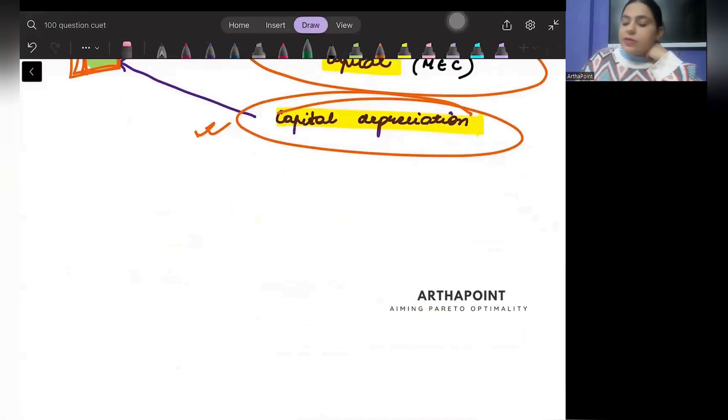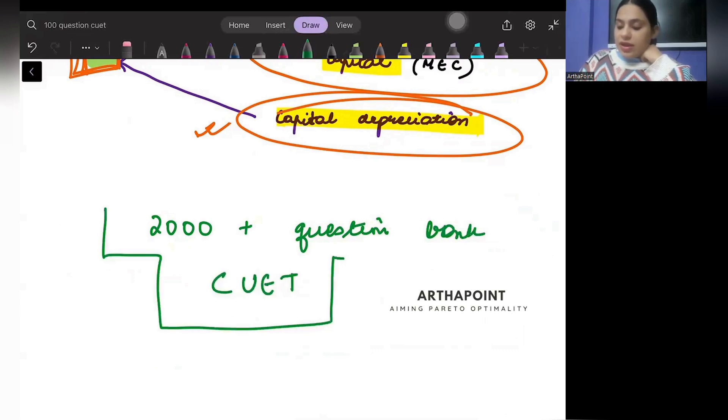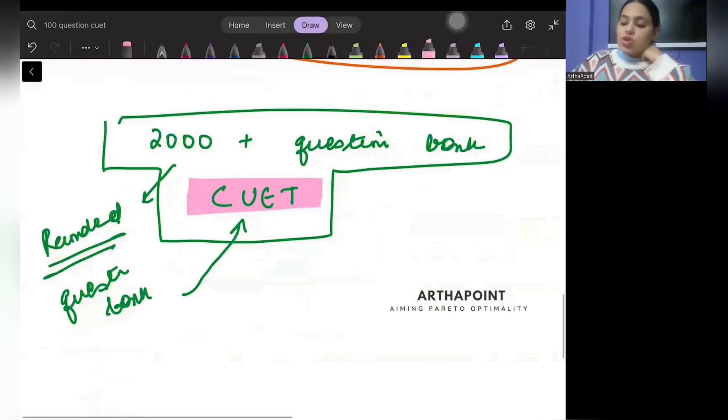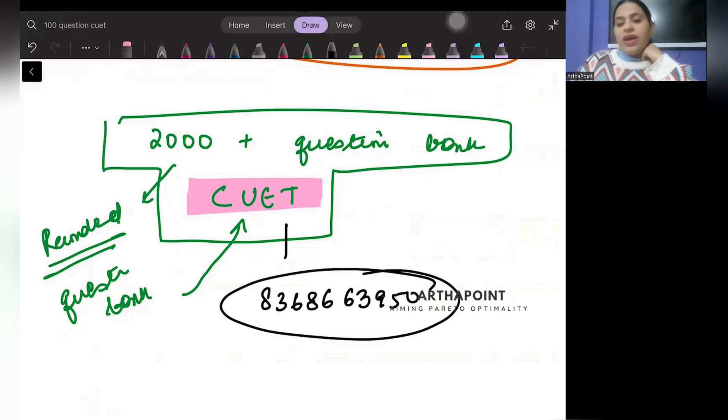I just want to make this announcement that we have two thousand plus question bank and this is a recorded question bank series. I have especially recorded these questions from the point of view of CUET. If you want you can contact us on 83686-63950 and you can take this question bank series. Thank you so much.